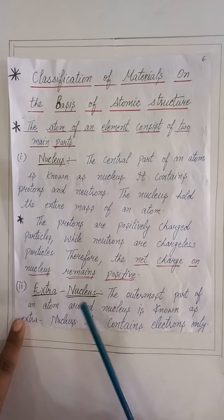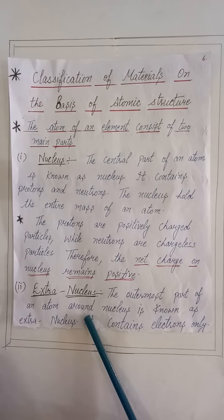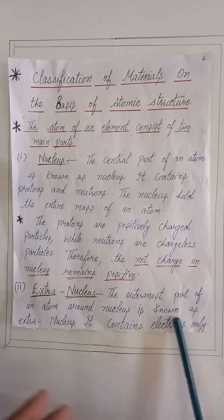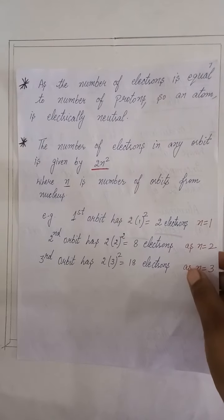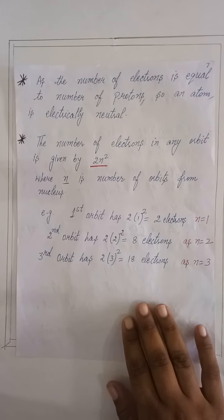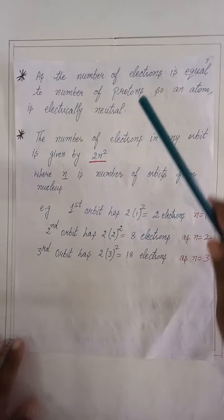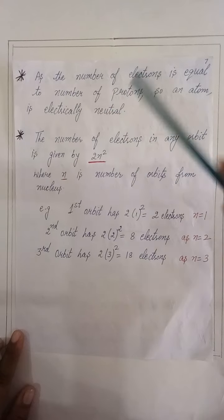The outermost part of an atom around the nucleus is known as extranuclear. It contains electrons only. As the number of electrons is equal to the number of protons, the atom is electrically neutral.